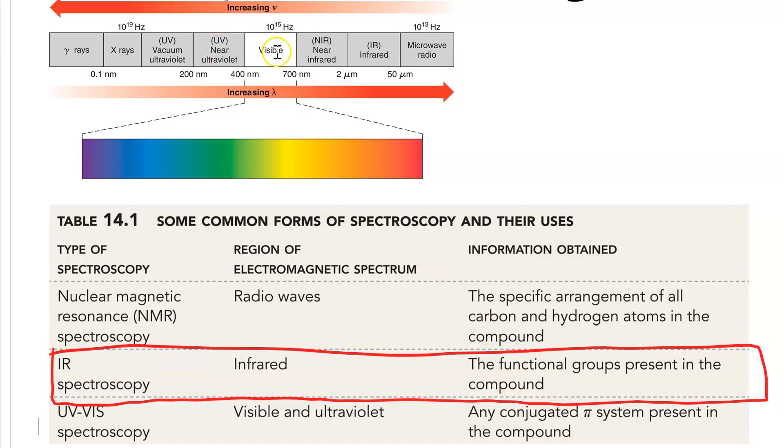If you use ultraviolet and visible you can get information about the molecular orbitals in the compound. But we're looking at the functional groups present in the IR.